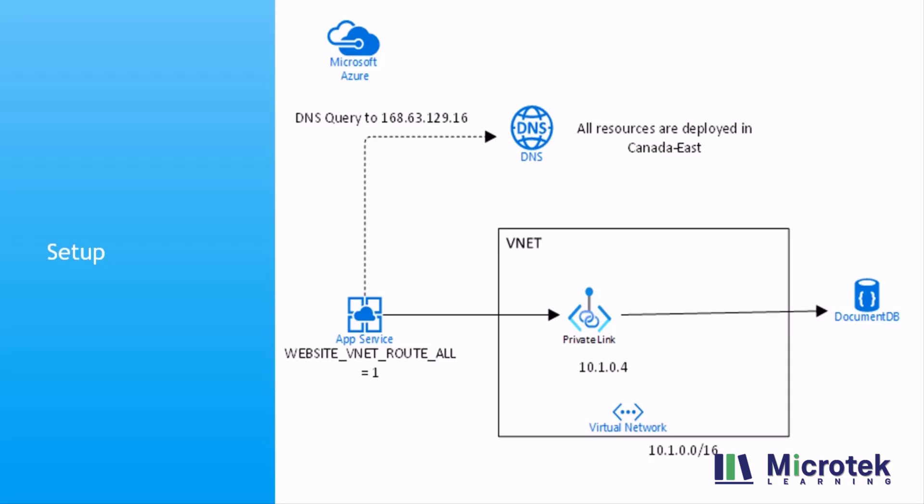Let's take a look at the setup. On the left-hand side I have an App Service deployed, and on the right-hand side I have a DocumentDB deployed. DocumentDB is basically a Cosmos DB. All the services shown in the figure are deployed in the Canada East region. If my web app needs to contact the Cosmos DB, it will be using its public IP to reach it, but that is a security concern.